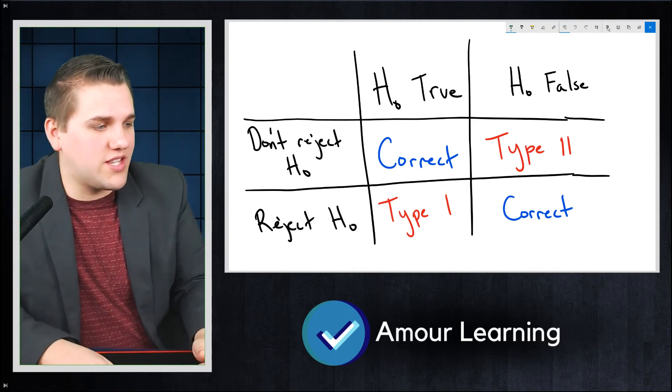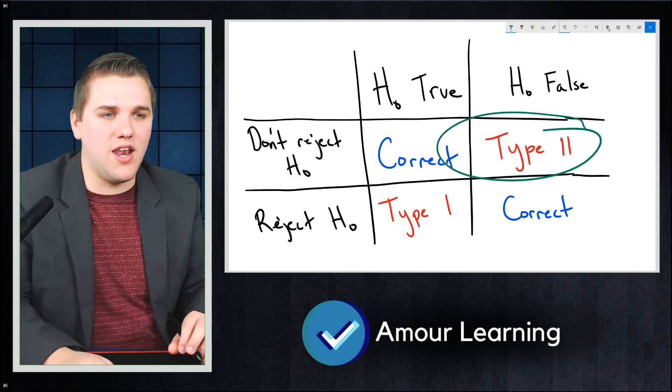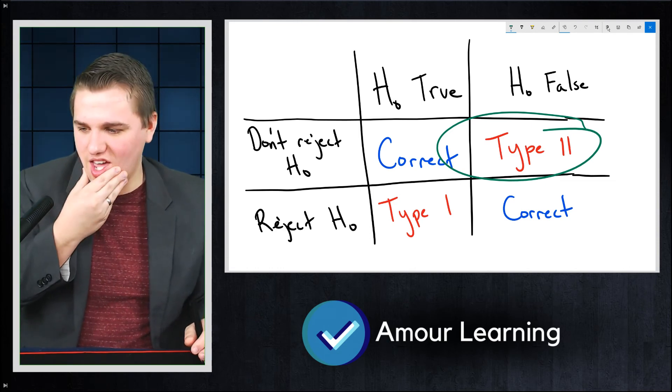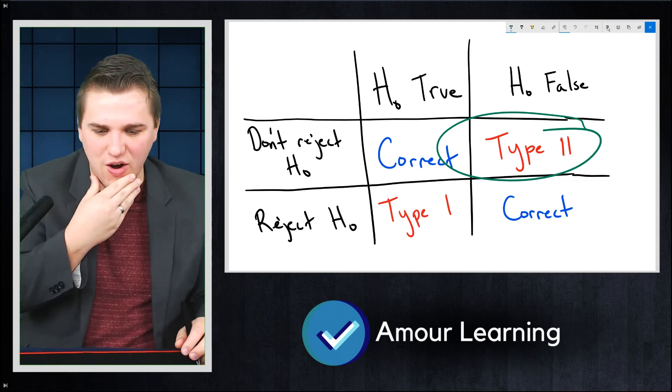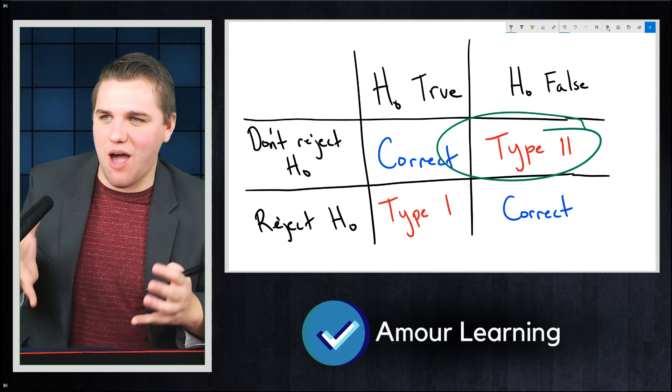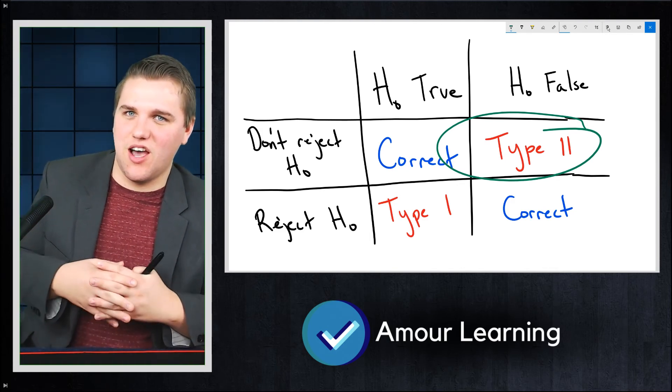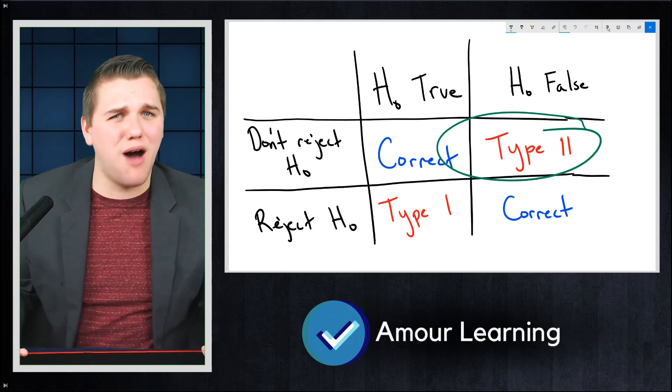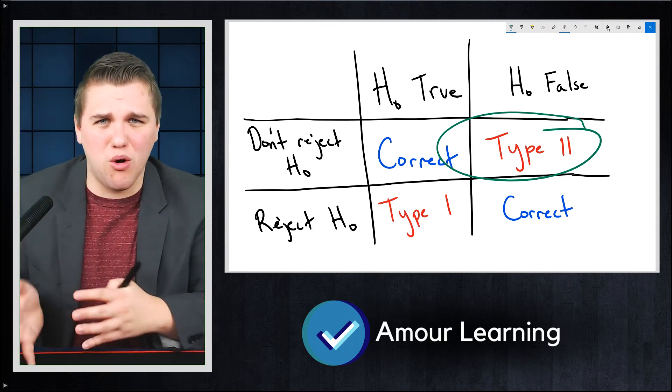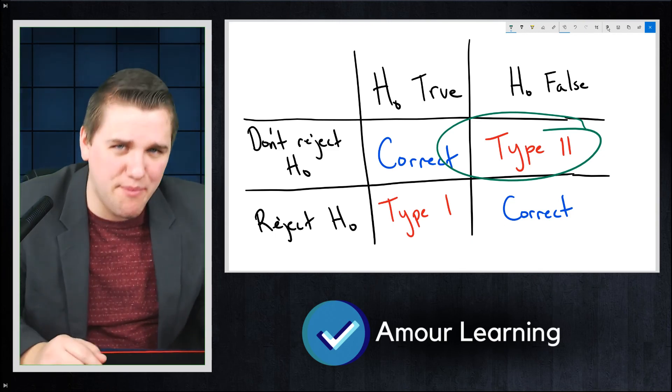However, with the type 2 error, this is when, for example, people decide, you know, let me think of an example of this. These are very rare. I can't think of a null hypothesis that's false. Maybe, let's say, the Copenhagen model for whether or not light is a particle or a wave or both, or whether or not we know what's going to happen with it.